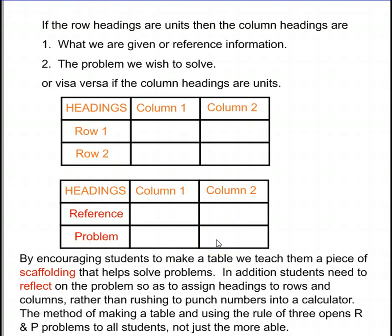By encouraging students to make a table, we teach them a piece of scaffolding that helps solve problems. In addition, students need to reflect on the problem so as to assign headings to rows and columns, rather than rush to punch numbers into a calculator. The method of making a table and using the rule of three opens ratio and proportion problems to all students, not just the more able.